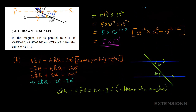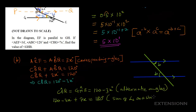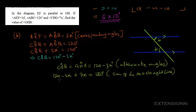We have angle GHB as 120 minus 3x degrees, but we need an actual value. So we need to find x. We notice that the sum of angles on a straight line is 180 degrees. On the straight line through B, H, and C, we have: (120 minus 3x) plus 7x equals 180 degrees — sum of angles on a straight line.